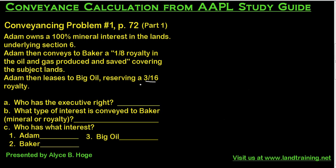Welcome to today's presentation, an online tutorial on conveyance calculations from the AAPL study guide. We're going to be looking at conveyancing problems on page 72 and we're going to eventually do all 12 of them. We're going to first take conveyancing problem number one and break the answer into two tutorials because question C requires a lot of explanation. We're going to cover A and B first.